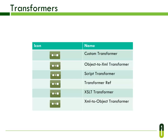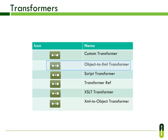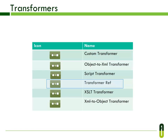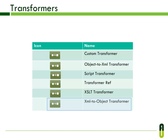Here you can see the different types of transformers. The Custom transformer delegates to a Java class. The Object to XML transformer converts a Java object to an XML representation using Stream. The Script transformer uses a script to transform the payload. The Transformer ref references a global transformer. The XSLT transformer transforms XML using XSLT. The XML to Object transformer converts XML to Java bean graphs using Stream.